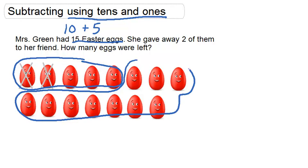Okay, so we can think of the 15 eggs as 10 plus 5, a group of 5 and a group of 10.